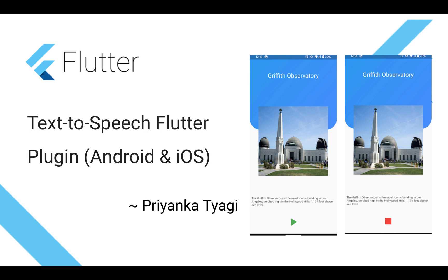There's a play button down at the bottom, shown with a green arrow. When you click this button it will start reading aloud the description, which says the Griffith Observatory is the most iconic building in Los Angeles, perched high in the Hollywood Hills at about 1134 feet above sea level. The green button will change into a red button so you can stop the playback.